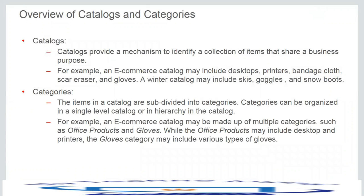What is a catalog? A catalog provides a mechanism to identify a collection of items that share a business purpose. For example, you may create a catalog for e-commerce, another catalog for winter sports, and a third catalog for off-season sales. An item when created can exist in all these multiple catalogs.